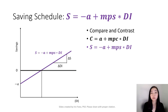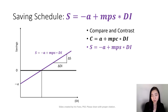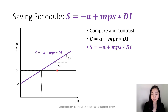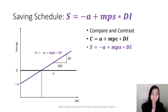Here is our savings schedule: S is equal to negative A plus MPS times DI, where A is our autonomous consumption. MPS is our marginal propensity to save, and that is also equal to the slope of our savings schedule. The slope is the change in saving divided by the change in disposable income, which is exactly the definition of MPS.